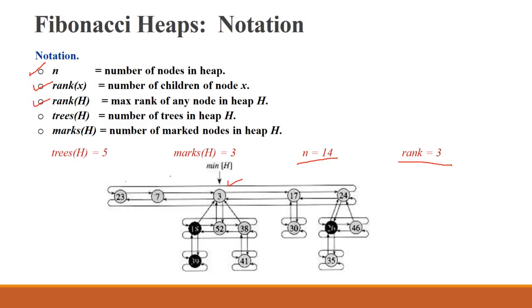Next is trees of H, which means number of trees in heap H. So number of trees: 1, 2, 3, 4, and 5. It means 5 number of trees which are in heap. Trees of heap equals to 5.